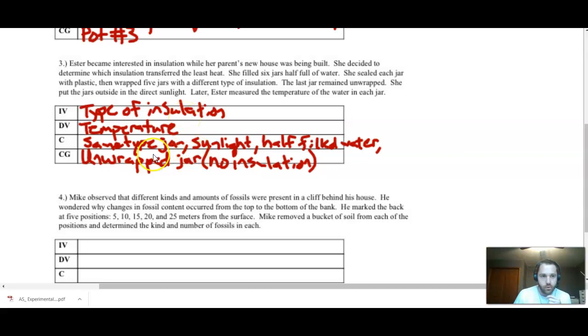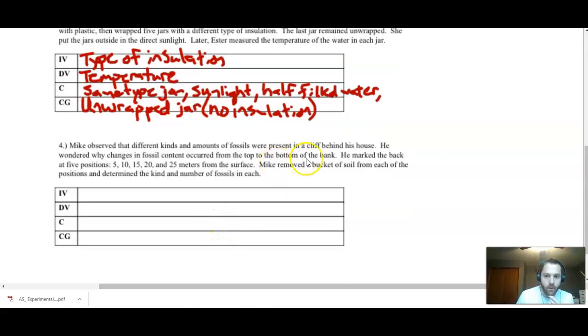Last experiment. Again, I would pause, try the video on your own, but let's go through this. Mike observed that different kinds and amounts of fossils were present in a cliff behind his house. He wondered why changes in fossil content occurred at the top to the bottom of the bank. He marked the bank at five positions, 5, 10, 15, 20, and 25 meters from the surface. Mike removed a bucket of soil from each of the positions and determined the kind and number of fossils in each. So independent variable in this case, what is it that the researcher is changing? Looks like he's changing the distance. He measured these distances out before he did anything. So his independent variable is actually going to be the distance. Then what he's recording is the number of fossils in each. So the number of fossils that he collects at these different distances.